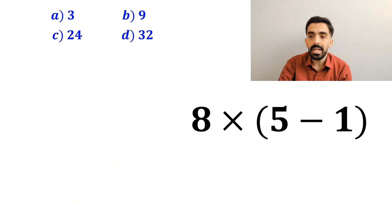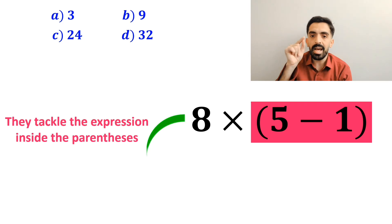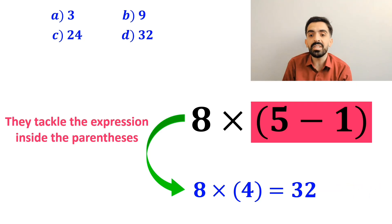In the final step, they tackle the expression inside the parenthesis and write it as 8 times 4, which ultimately gives them the answer 32.